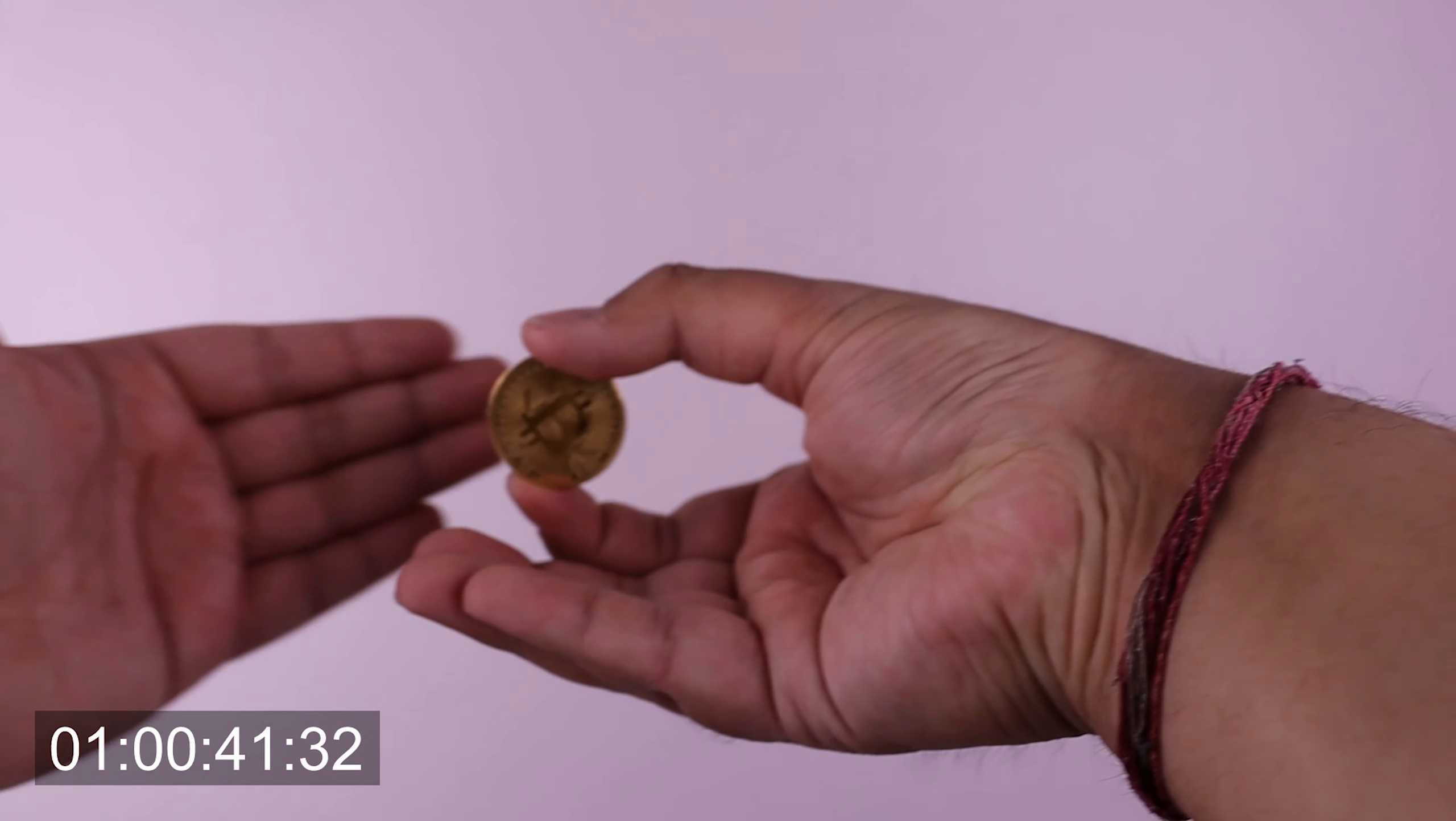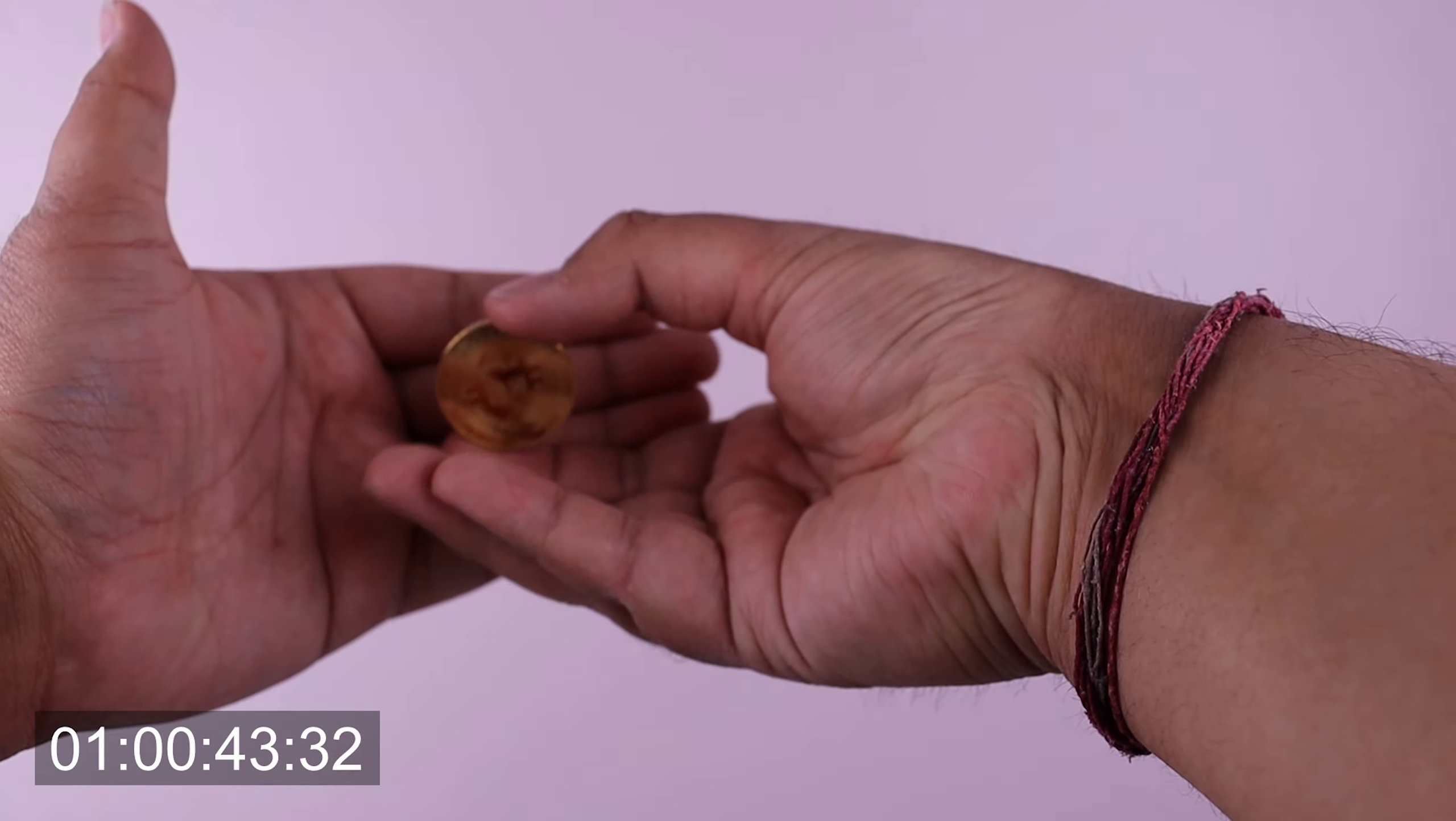For the last trick we'll be learning how to take a coin and then make it disappear. Go like this, come over to take the coin and then hide the front view with the rest of your fingers.